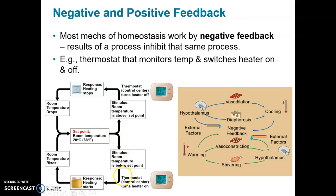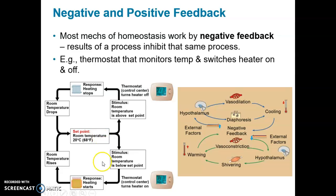It's a negative feedback loop because, for example, if the temperature drops, the response of the thermostat is to turn on the heat. The heat raises the temperature in the room. When the temperature hits the set point, the thermostat detects that and shuts off the heater, and the temperature drops back down to the set point. The temperature increase itself causes the shutting off of the heater — that's why it's called a negative feedback loop.